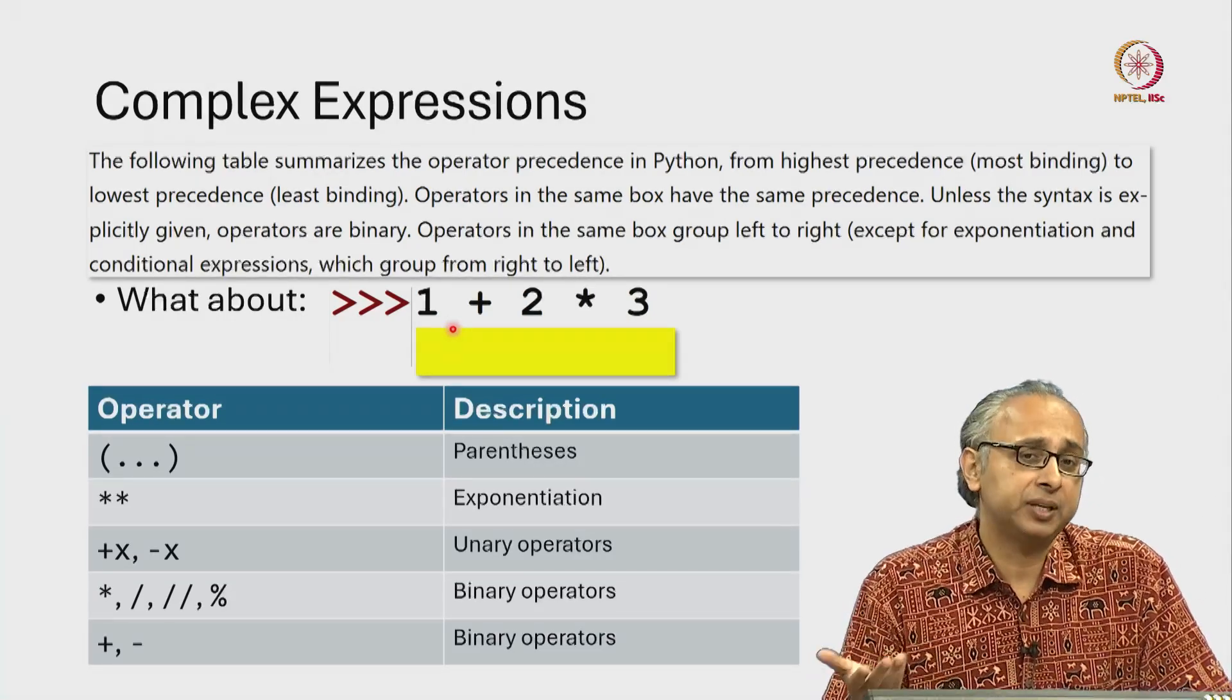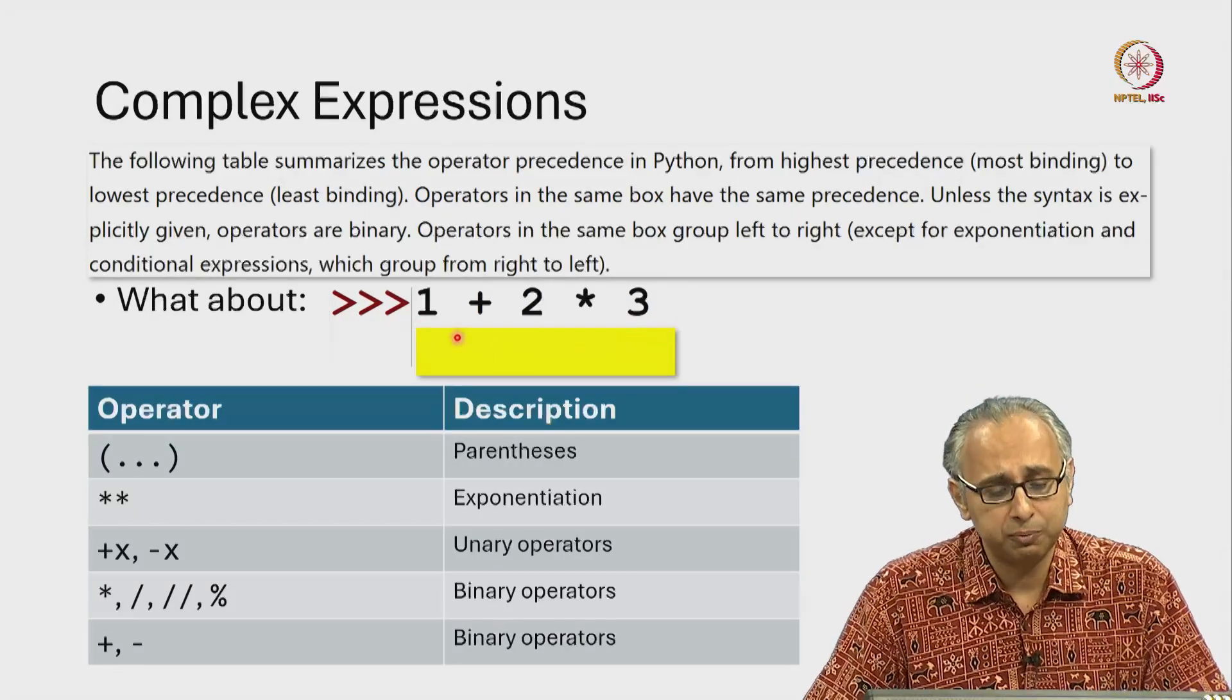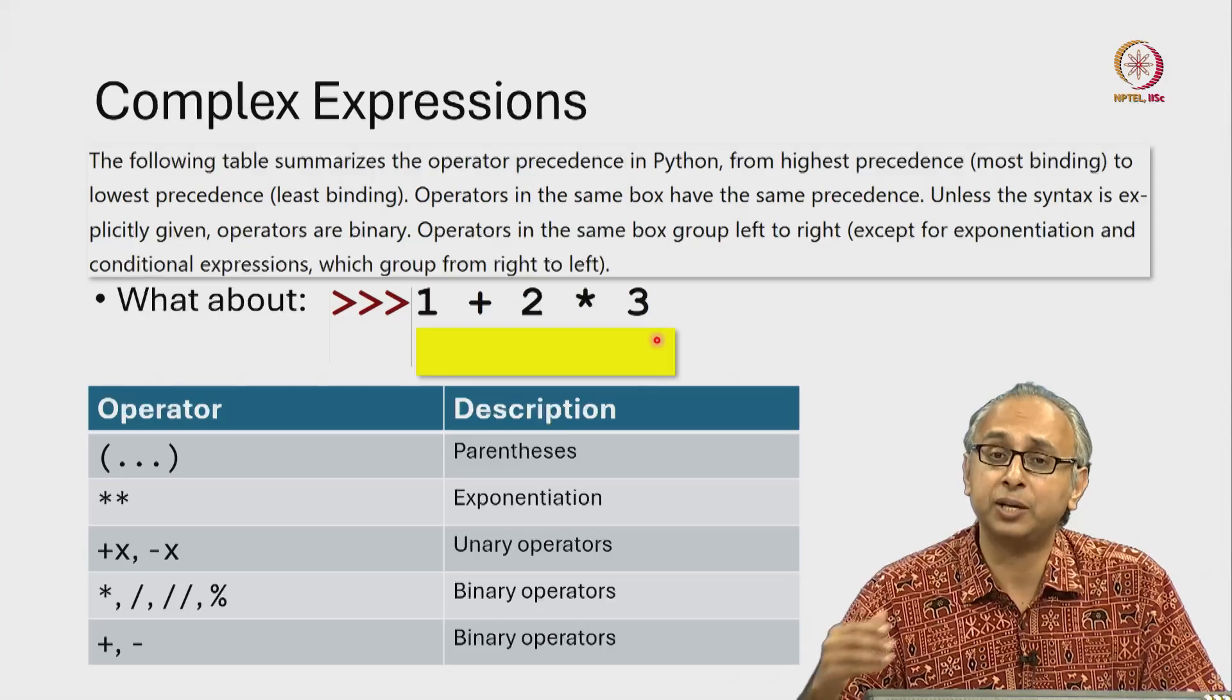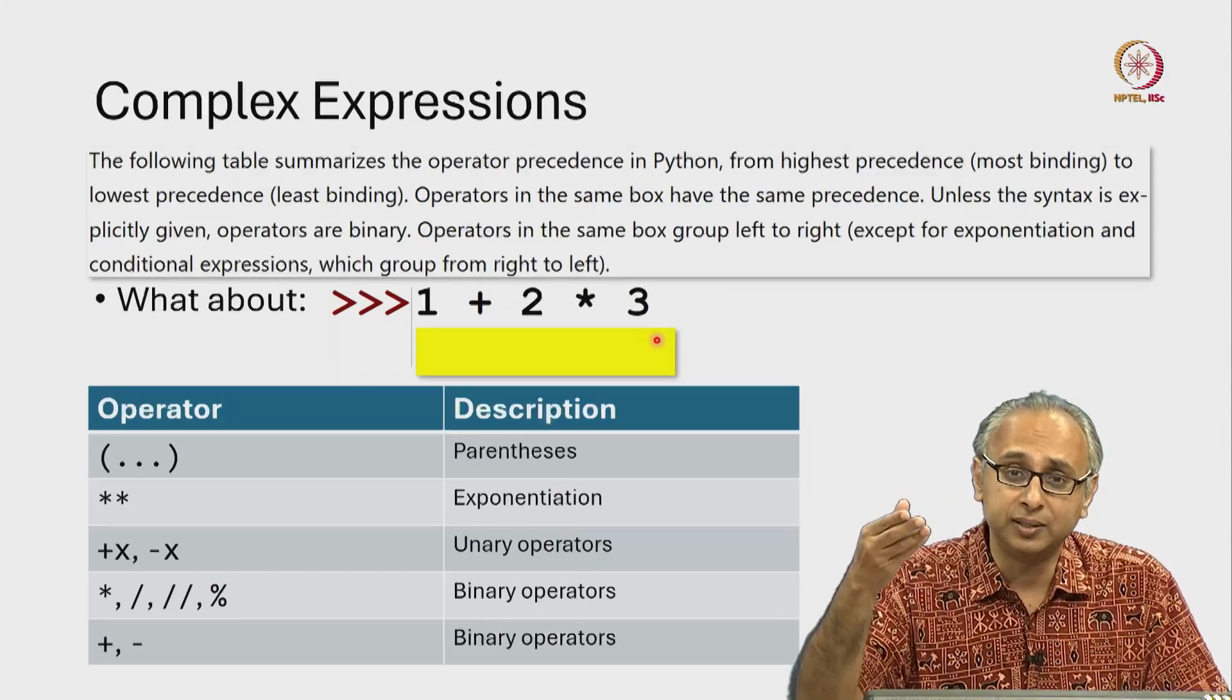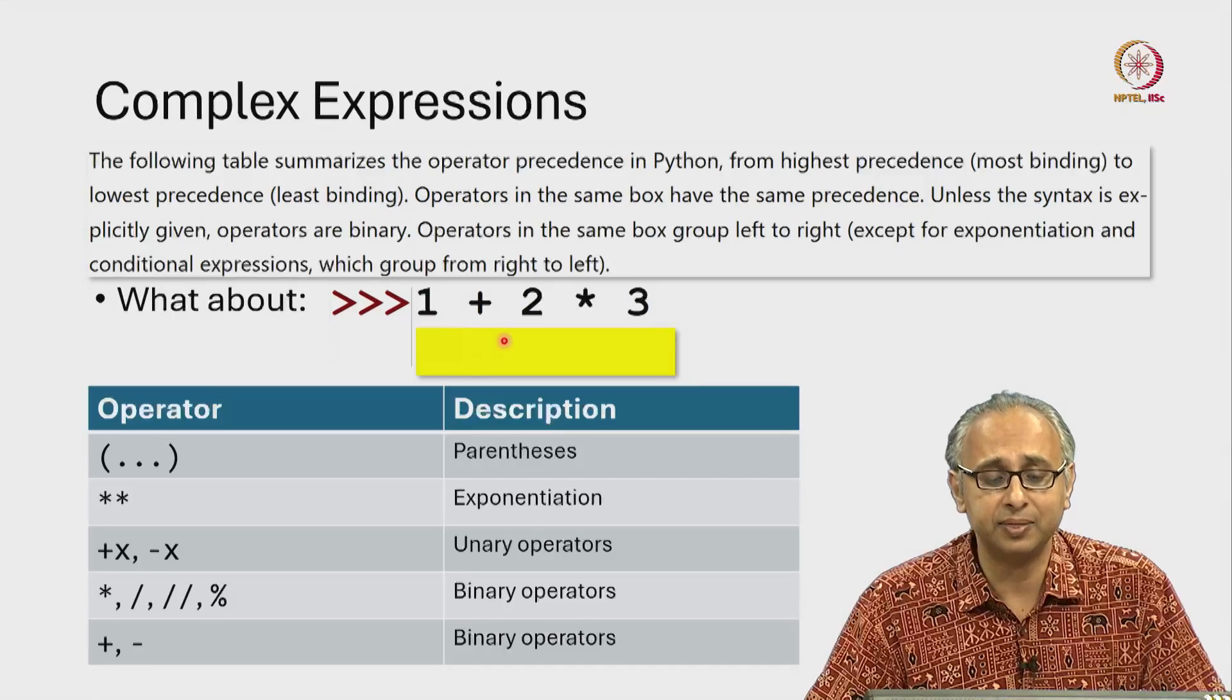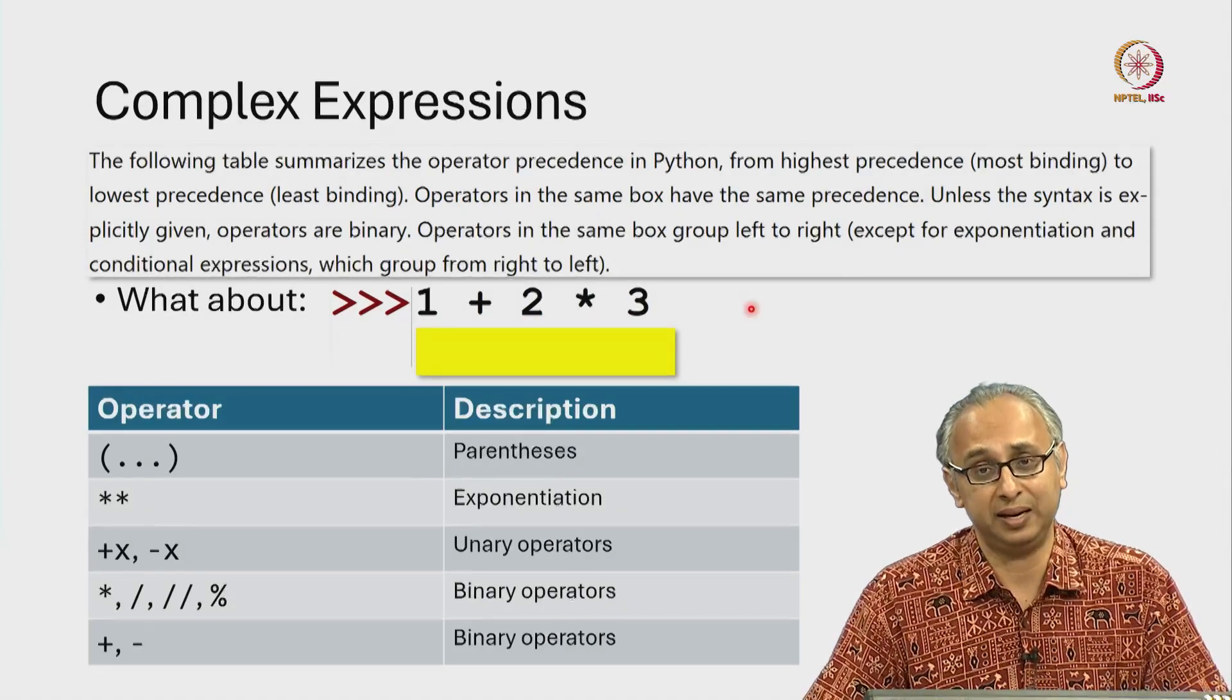But another perfectly reasonable way of trying to make sense of this is, well, we'll just sort of process it in the order it was written. After all, I told you that the REPL reads. So while it's reading it, it might say, oh well, they typed 1 and then plus 2 and 1 plus 2 is 3 and then 3 times 3 is 9.